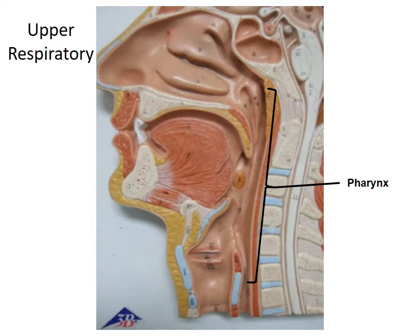As the air comes in, it is going to go down a tube — this tube here from all the way up top, all the way until it goes through this little fork in the road. This tube is called the pharynx. The pharynx is subdivided, and that's what we're going to look at in the next slide.